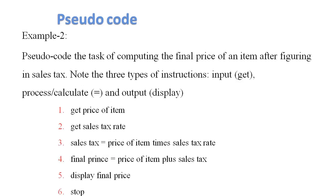Another pseudocode example: compute the final price of an item after figuring in sales tax. Note the three types of instructions: input (get), process (calculate, equal to), and output (display). These are the instructions used in pseudocode.